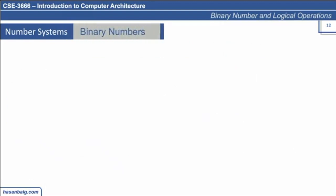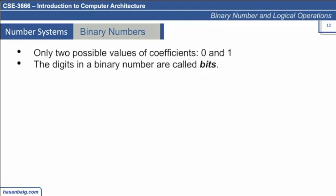Let's talk about the binary number system. In the binary number system, there are only two possible values for each coefficient. Every digit in a number has only two possible values, either 0 or 1. These digits in binary number systems are called bits. For example, 1, 0, 1, 1 — this is how we represent a number in base 2, which is a binary number.